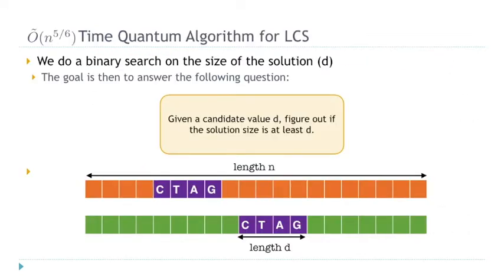In the remainder of this talk, I briefly describe the overall ideas for getting a solution for LCS — the solution for LPS follows from the same ideas. For problems like this, the first step is to do a binary search on the solution size. Instead of maximizing the size of the common substring, we assume an extra parameter D is given and just want to know if there is a solution of size D. We output yes or no accordingly, and then binary search over D to find the maximum.